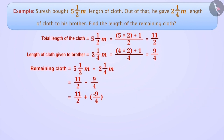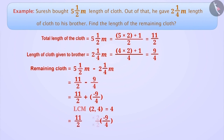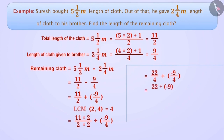Now let's find the result. The denominators of the two rational numbers are not equal, so we must first make them equal. We find the LCM of the denominators of 11/2 and minus 9/4, which is 4. The denominator of minus 9/4 is already 4, so we don't change it. For 11/2, we multiply both numerator and denominator by 2, giving 22/4. Now adding the numerators with equal denominators, we get 13/4. So Suresh has 13/4 metres, which is 3 and 1/4 metres of cloth left.